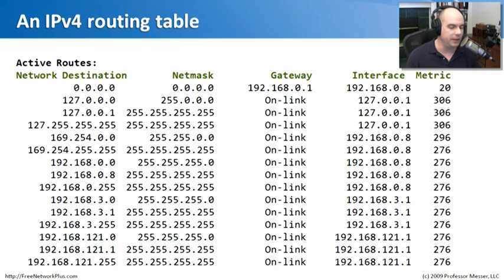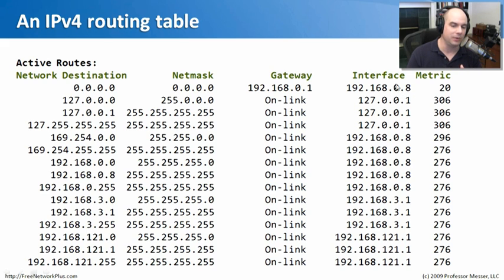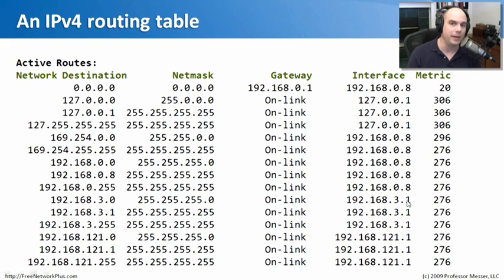This is a routing table from my computer. It says if I'm going to 0.0.0.0, which is a default route, send it out the 192.168.0.8 interface on my machine, connecting to a gateway — that's the link whenever I need to talk out to the internet. If I need to talk to an internal network, say a 3.0 network, it sends it out a different interface, 192.168.3.1. This routing table determines the best way to get to a range of IP addresses and where traffic should go. We'll come back and look at a routing table example in more detail shortly.